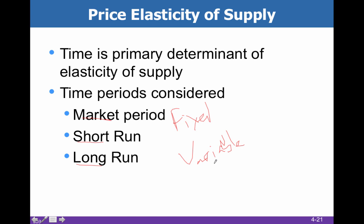For example, if I'm a farmer with a 20-acre farm growing corn, I can vary how much fertilizer I use, how much water I use, and how many people I hire to harvest. But those 20 acres are pretty fixed. In the long run, I can buy the neighbor's farm or sell mine. In the short run, I can only change the variable factors, but in the long run I can even change the fixed factors.